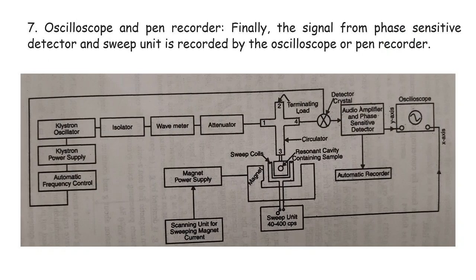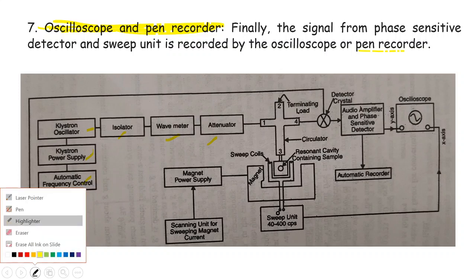The last part is the oscilloscope and the pen recorder. Finally, the signal from the phase-sensitive detector and the sweep unit is recorded by the oscilloscope or the pen recorder. In the diagram, you can trace the full path: source components (klystron, isolator, wave meter, attenuator), then the circulator (Magic T), then the resonant cavity placed between the magnet poles (with sweep unit and power supply), then to the detector crystal, then audio amplifier and phase-sensitive detector, and finally to the oscilloscope. This is how we obtain the ESR spectra.